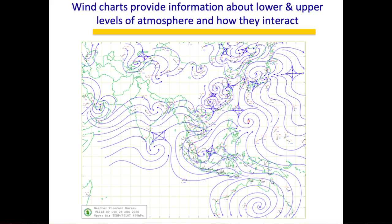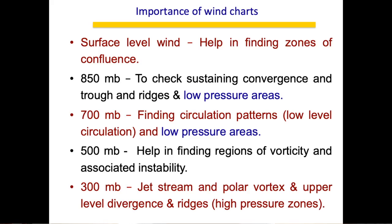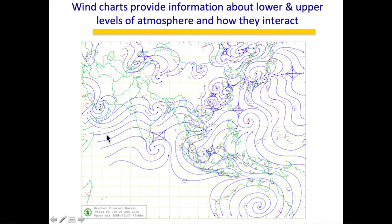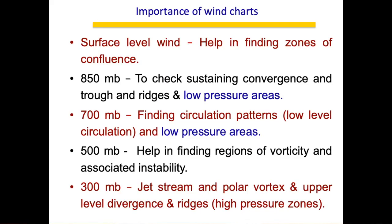Wind charts are more important than pressure charts because they give information about both lower and upper layers of the atmosphere. Pressure is only a surface quantity — you measure it at ground stations and draw isobars — whereas wind charts give information at different vertical levels. As seen in a wind chart, a trough and ridging pattern becomes more organized into a low or high pressure system.